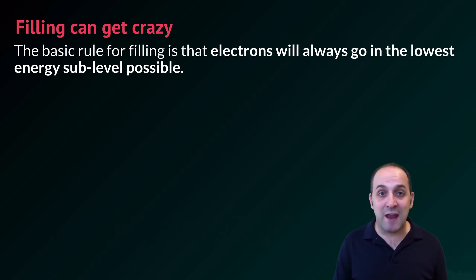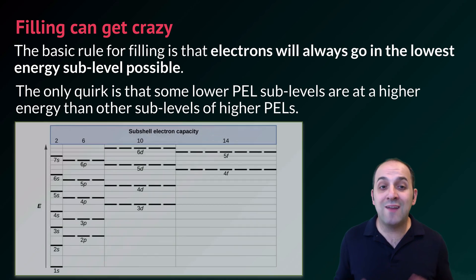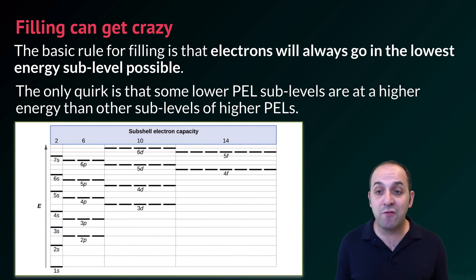It would be great if that's how filling stayed, if we just filled in order, but the basic rule for filling is that electrons are always going to go into the lowest energy sublevel possible. If it just stayed that way, it would probably be pretty easy to get our head around expanded electron configurations, but unfortunately there are a couple of quirks. The major one is that electrons will always go in the lowest energy sublevel possible if we're talking about the ground state. The only quirk is that some lower principal energy level sublevels actually occupy a higher energy than other sublevels of higher principal energy levels.